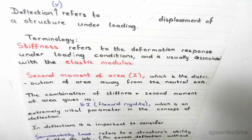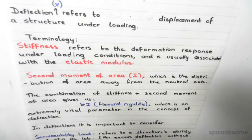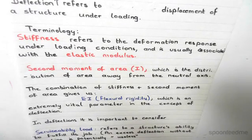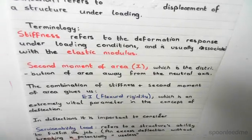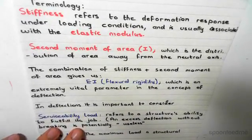we get a parameter EI called the flexural rigidity. This is one of the most vital parameters in the concept of deflections. It's extremely important - this parameter determines the extent of deflections.